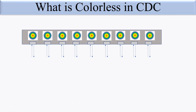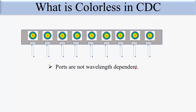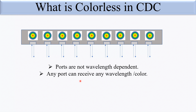So what is colorless? A colorless system is one in which every port has the capability to receive or transmit any wavelength — ports are not wavelength-dependent. In a colorless MUX/DEMUX system, every port can receive or transmit any wavelength or color. These ports are tunable, meaning they can tune to any frequency to receive or transmit a particular lambda. This is what colorless means — OADM with color-independent ports.